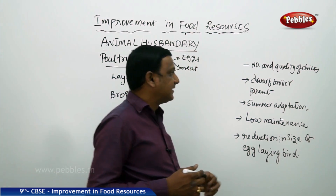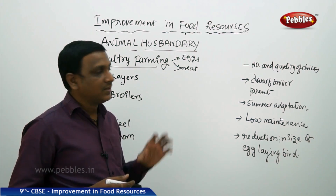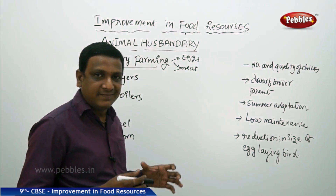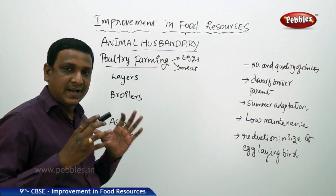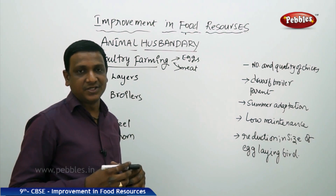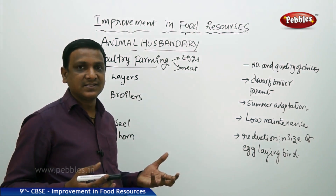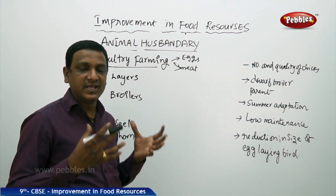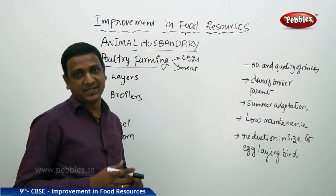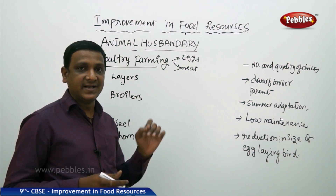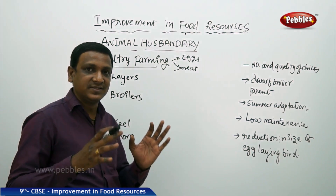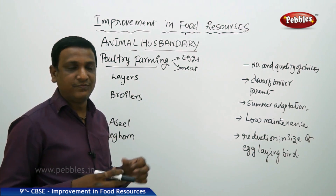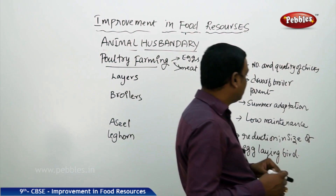The dwarf broiler parent is selected for chick production. Summer adaptation is also important — the bird selected should be adapted to hot climatic conditions and should withstand high temperatures. Otherwise, many birds die in summer because of high temperature, which is a loss. The selected variety should have resistance to high temperatures, because in summer the temperature can go up to 50 degrees Celsius.